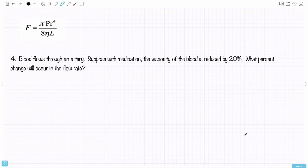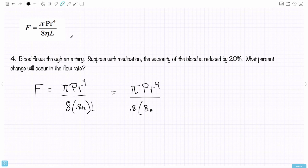Last one. Blood flows through an artery. Suppose with medication, the viscosity of the blood is reduced by 20%. What percent change will occur in the flow rate? So, we'll follow through the same procedure. Radius isn't changing. This time, I have a 20% decrease in the viscosity. So, I'm going to have 80% of the viscosity. So, I'm going to say 8 times 0.8 eta times the length. This is times, of course, all of it. Now, that means I have π, pressure, radius to the fourth power. Everything divided by... Well, let's put this 0.8 factor in front. 8 eta. I don't want to multiply 0.8 times 8 because I want to write this in terms of the original flow rate.